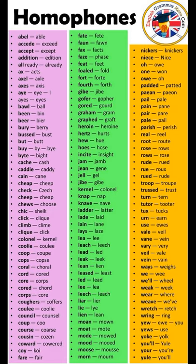Homophones are words that have exactly the same sound and pronunciation but different meanings and usually different spelling. For example, 'hour' (noun, 60 minutes) and 'our' (possessive adjective, belonging to us) have the same sound but different meanings and spelling. In another example, 'bear' (noun, large heavy animal with thick fur) and 'bear' (verb, to tolerate or endure) have the same sound and spelling but different meanings.